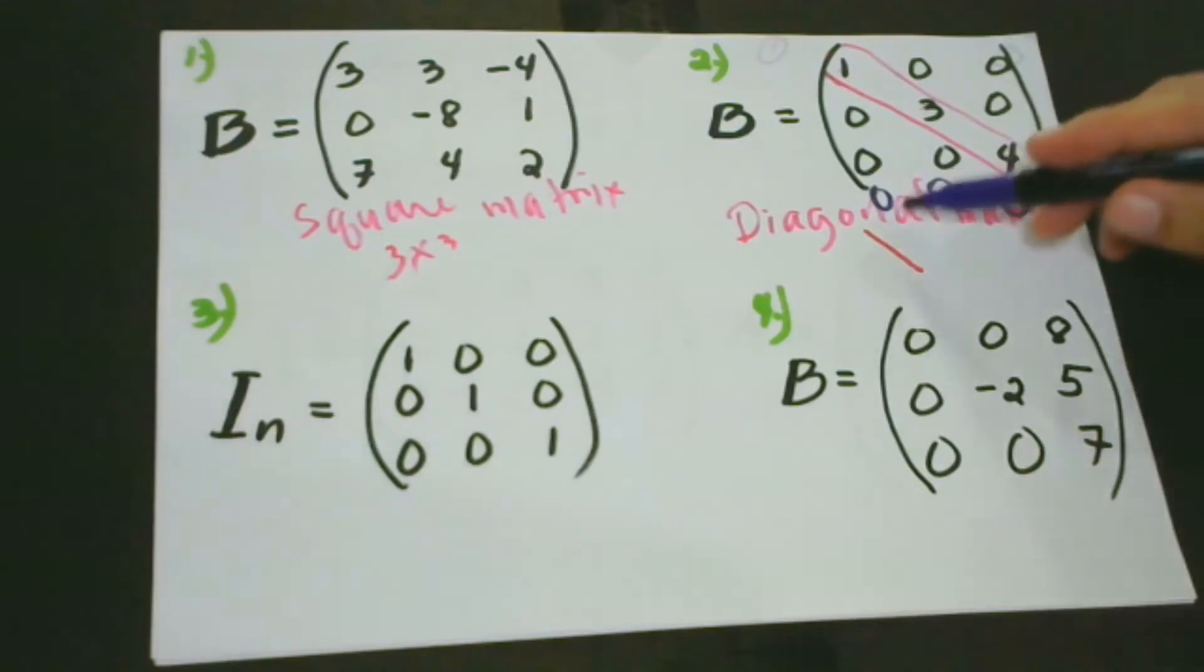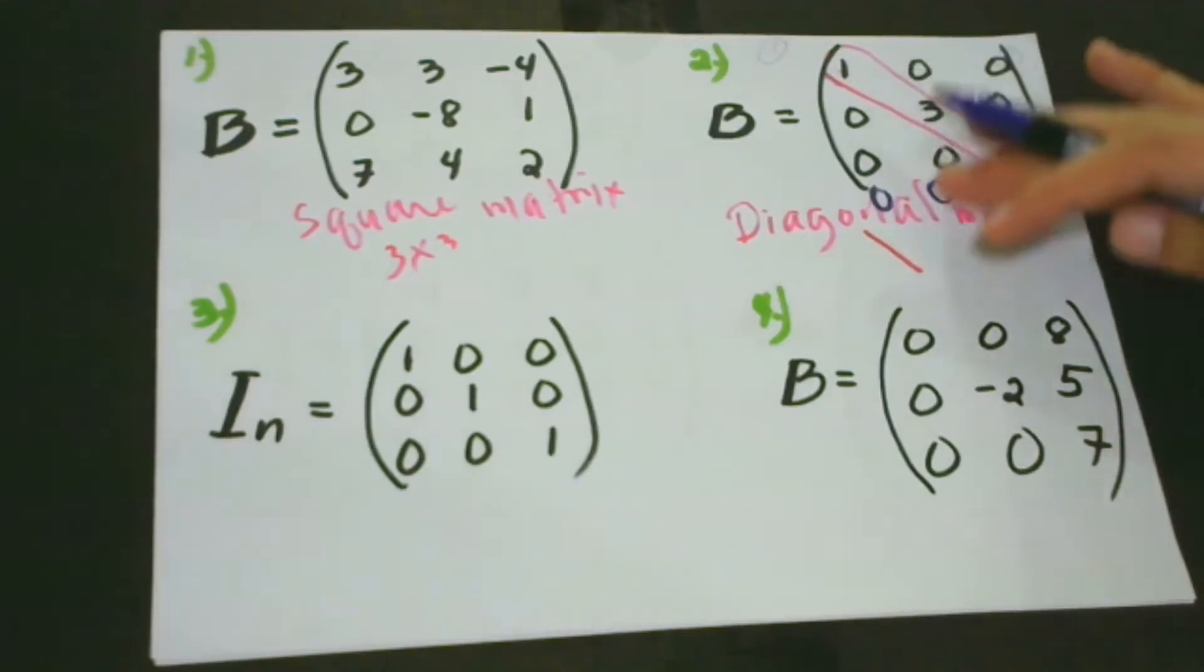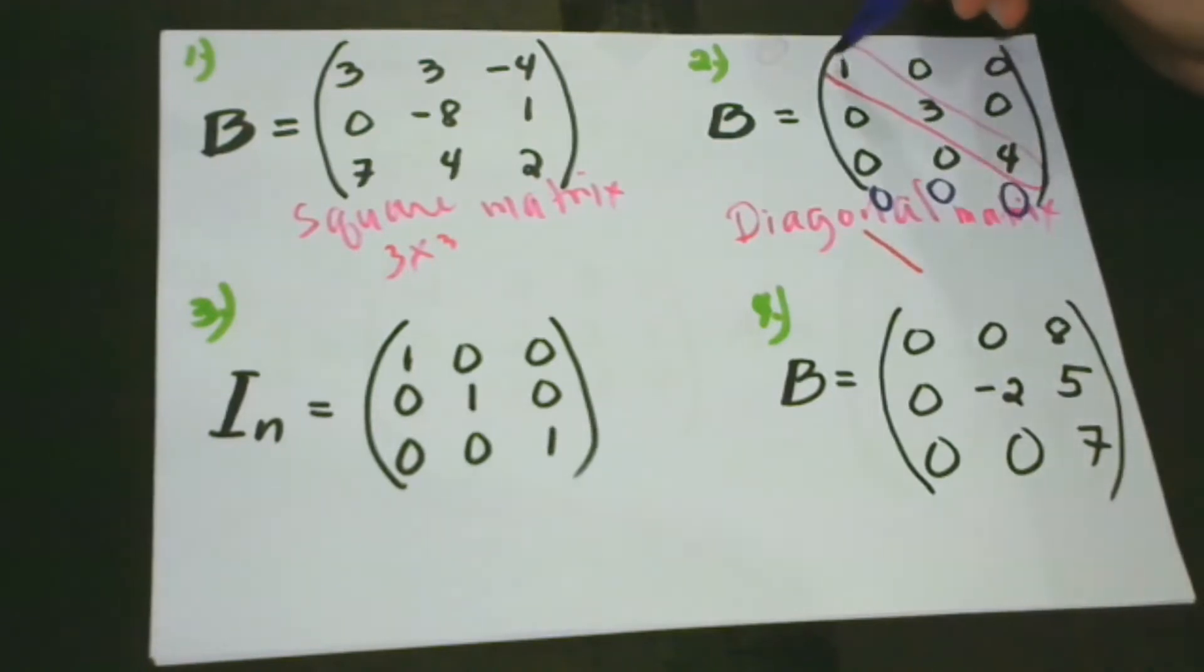But of course, we should not change our diagonal elements to be 0 all in all. We can just add here 0, but not making all of these 0, because our diagonal elements would still be the same. Just from the upper left going to the bottom right. That is our diagonal matrix.